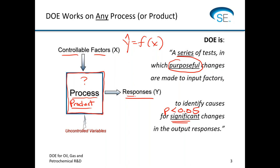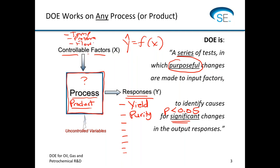Number one is going to be identifying the critical quality responses that you want to measure. Yield is a common one for oil, gas, and petrochemical. We also have issues of purity. Those would be a couple of things to consider for responses, but really there's no limit — you can measure whatever you think might be important and see what happens when you change these factors. On the input side are the factors: common things for oil refining would be temperature, pressure, and flow rate. You might also have variations in your raw materials coming in, and that would be something to consider as well.